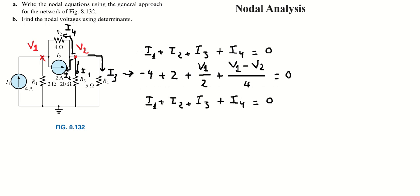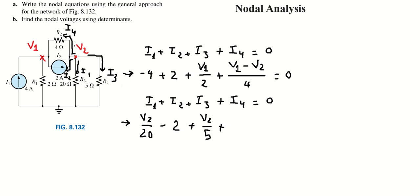Because this is about V number two, the expressions are different. For I number one, we have V number two divided by 20. For I number two, the current goes in the opposite direction so we put negative two. For I number three, we have V number two divided by five. For I number four, we have V number two minus V number one divided by four.